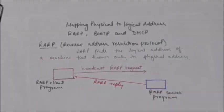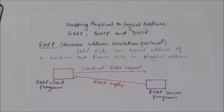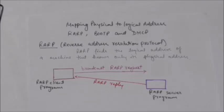The full form of RARP is Reverse Address Resolution Protocol. RARP finds the logical address for a machine which knows only its physical address. A machine can get its physical address, which is unique locally, for example by reading its network interface card.